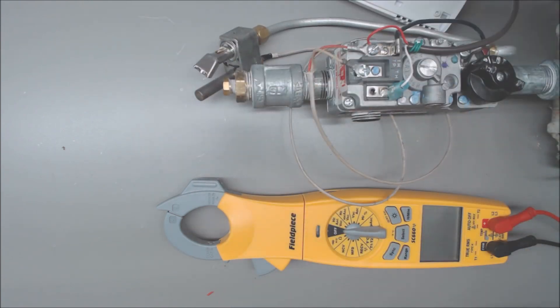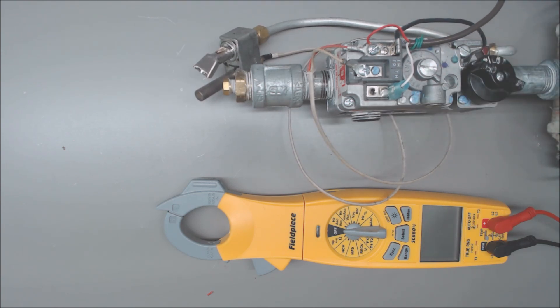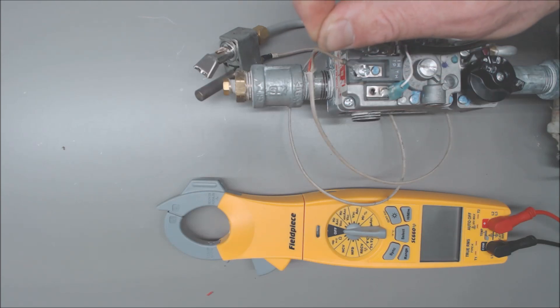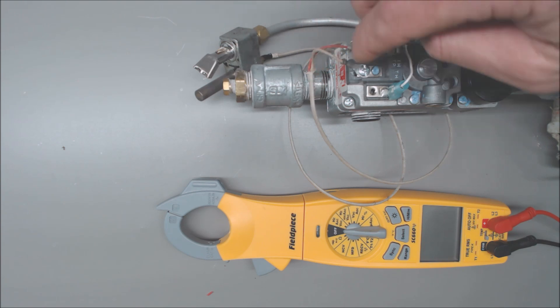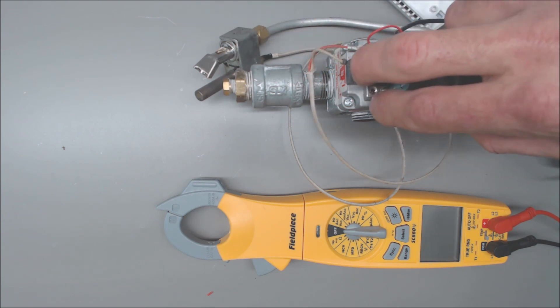The big thing about these millivolt gas valves is that you use a thermostat that is rated for 750 millivolts. If you try to use a standard thermostat, the contacts may not close completely and you might have resistance between them. You might lose your millivolts DC from when you take your reading here to where you take your reading right here.